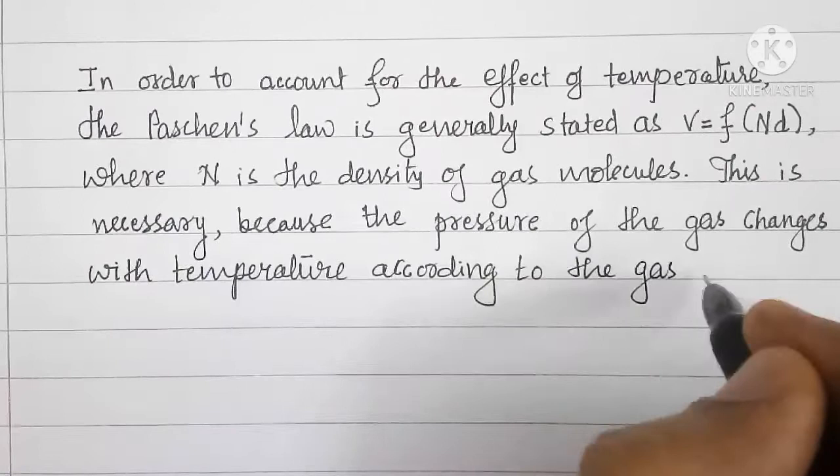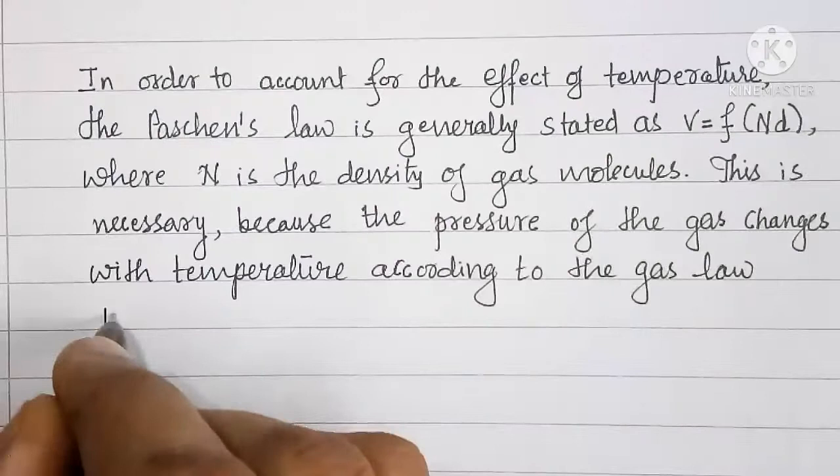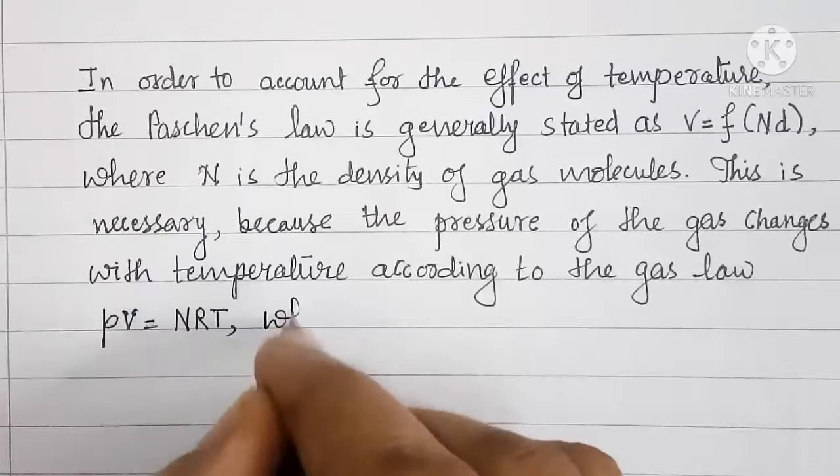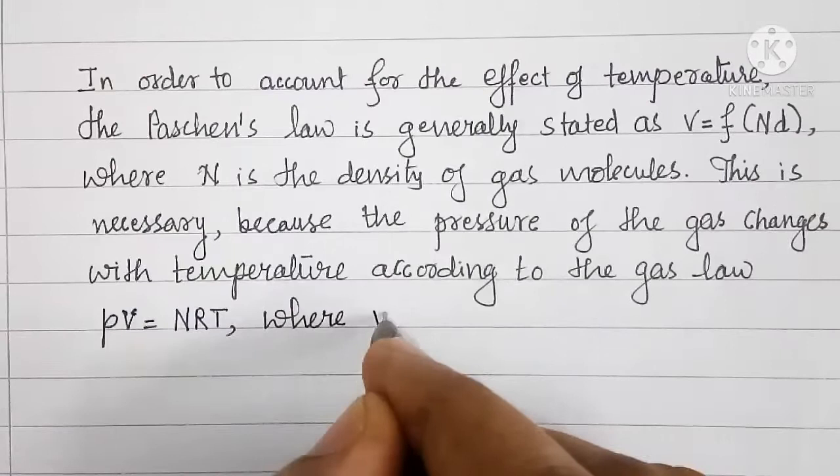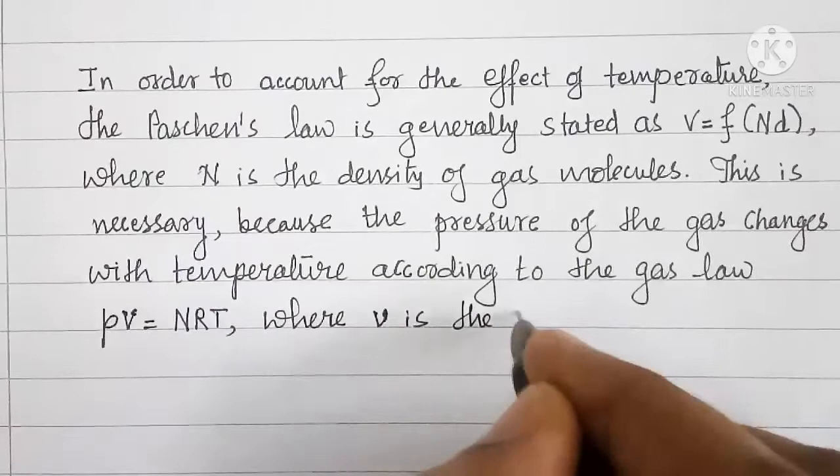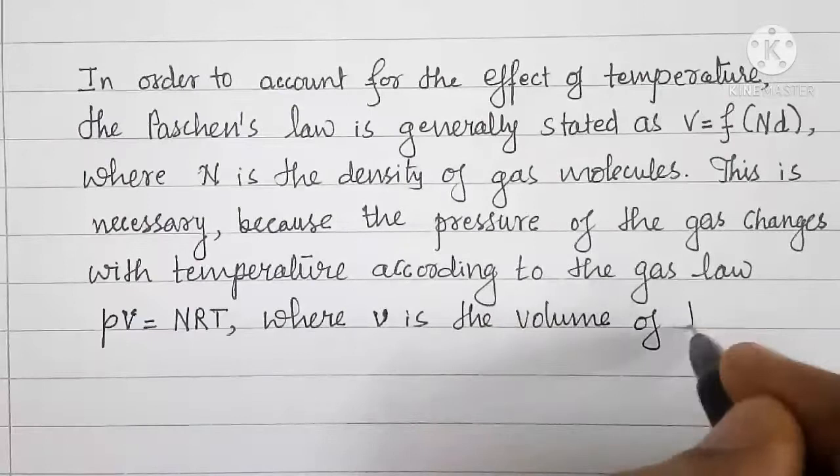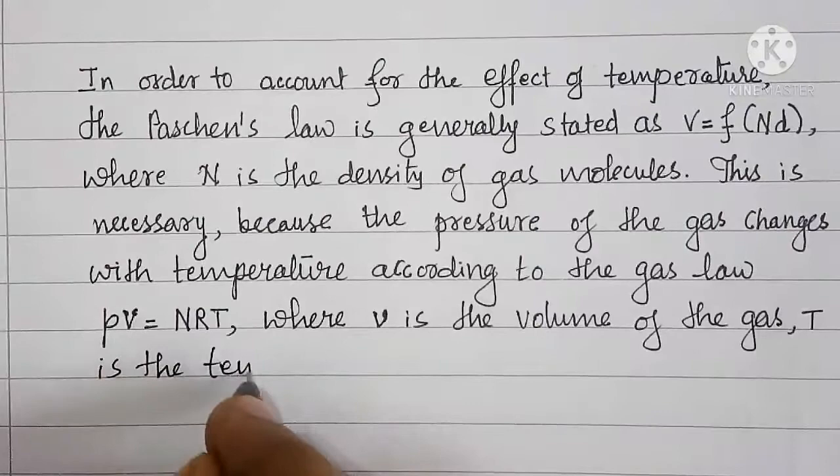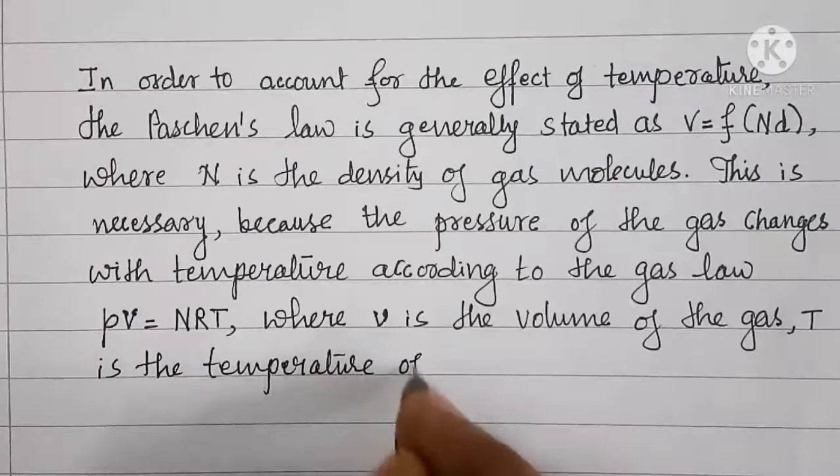Pressure into volume is equal to N into R into T, where V is volume of the gas, T is temperature of the gas, and R is a constant.